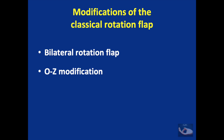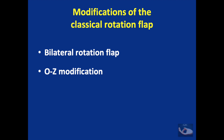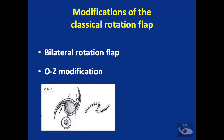There are many modifications of the classical rotation flap. The first is the bilateral rotation flap, which uses two rotation flaps for a single defect that is converted into two triangles. The second modification is the O-to-Z modification, which also consists of two rotation flaps for a single defect.